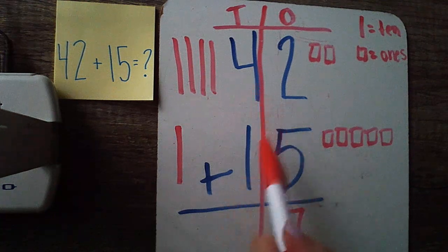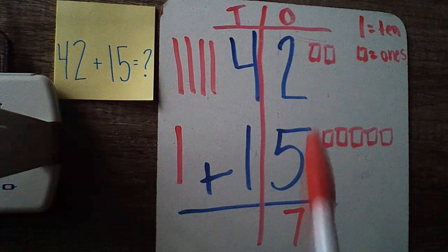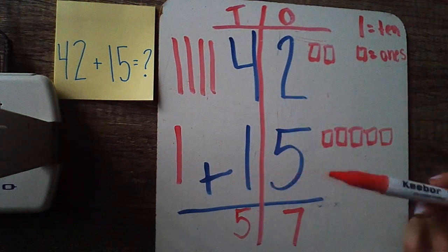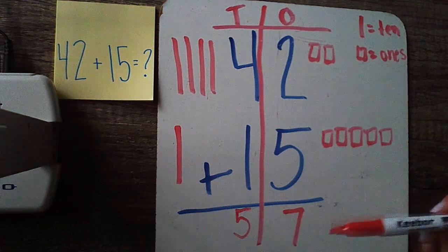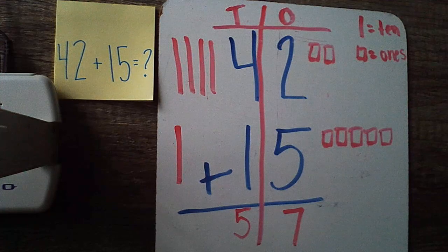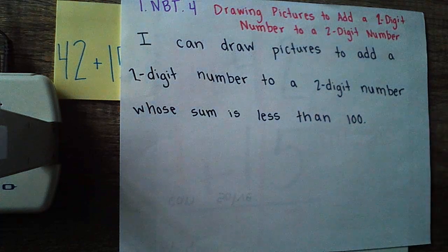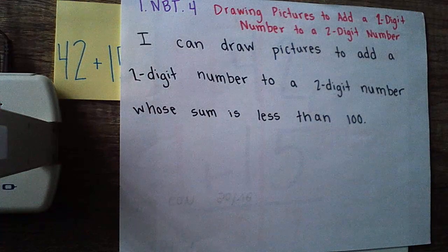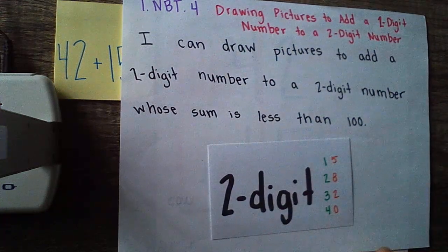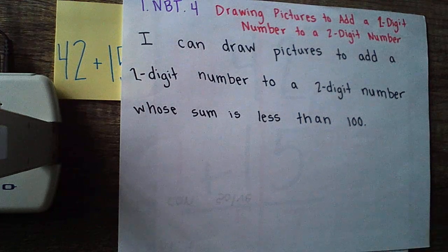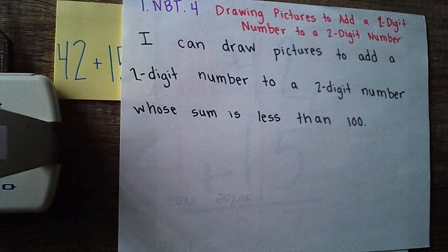So 42 plus 15 is 57, which is the same as five tens and seven ones. Awesome job friends! Today we drew pictures to add a two-digit number to a two-digit number, remembering that two-digit numbers have a digit in the tens place as well as the ones place. We added them together by drawing pictures, and their sum — the answer when we put them together — was less than 100. Keep in mind that drawing pictures is a great strategy because you're always going to have a piece of paper and a pencil when taking any kind of test.